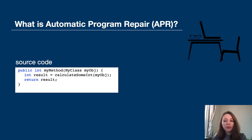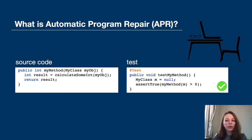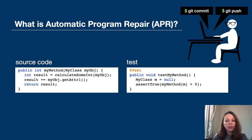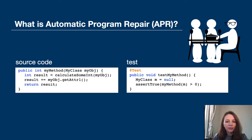Imagine you have some source code, for example in Java, and a passing test that invokes your method. Then you decide to change the method and the way you calculate the return result. When you are done changing your code, you commit and push the changes and go for lunch.